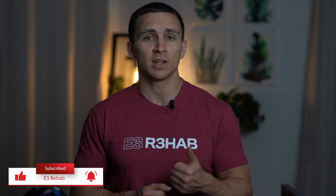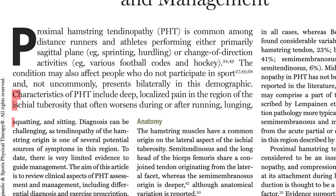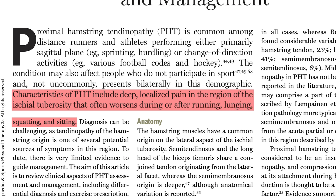Proximal hamstring tendinopathy is seen in various athletic populations such as runners, sprinters, hurdlers, and football players, but it can also be seen in yoga practitioners and the less active population. The characteristics include deep, localized pain in the region of the ischial tuberosity that often worsens during or after running, lunging, squatting, and sitting. It's a non-traumatic diagnosis, so it has a gradual onset.